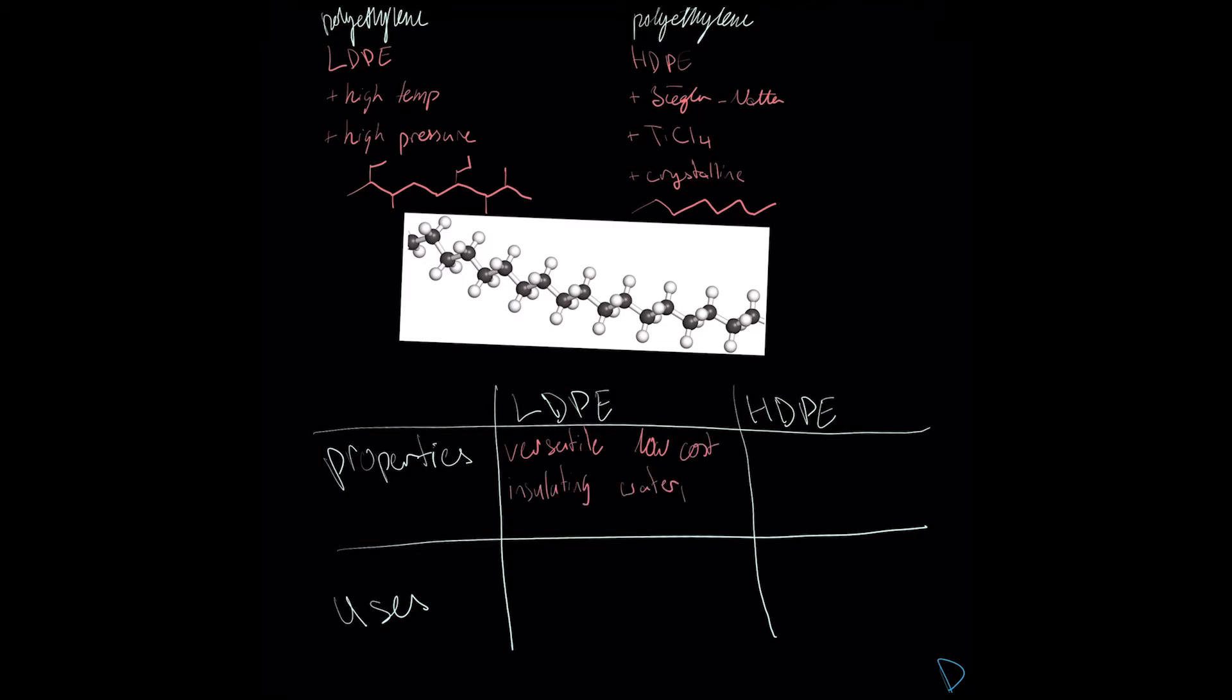In general, polyethylene is a versatile, low-cost, electrically insulating, chemically inert, and waterproof polymer. These properties come from its simplicity in manufacturing and chemical structure. LDPE can also be processed to be transparent. It is primarily used in plastic bags, packaging, and other so-called disposable applications.